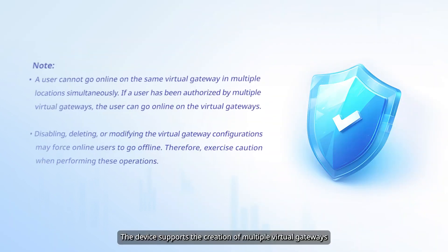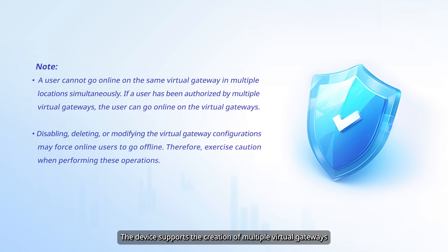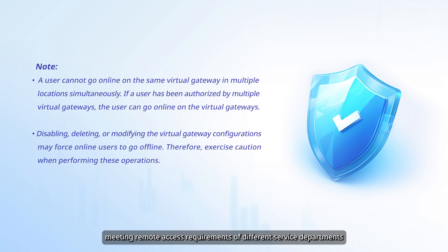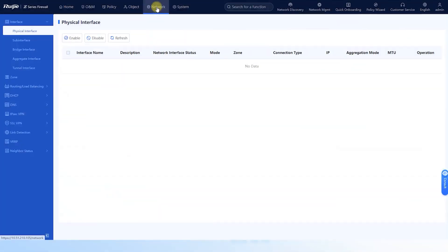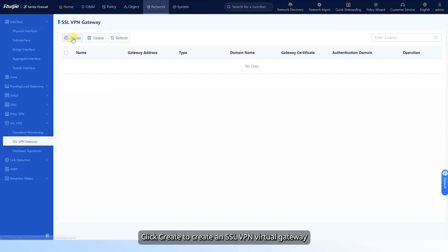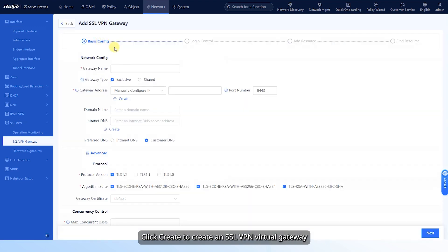The device supports the creation of multiple virtual gateways, which are independent of each other. Users and resources can be configured on each virtual gateway to enable independent management, meeting remote access requirements of different service departments. Choose Network > SSL VPN > SSL VPN Gateway. Click Create to create an SSL VPN virtual gateway.